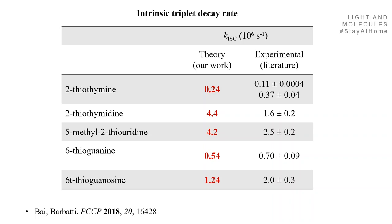Look at the comparison between theory — the red data — and experimental data — the black data in the table — for a few different thionucleobases. The agreement is in the right range. It's not a fully quantitative agreement, but given all the levels of approximation involved, it's really very good. I'm particularly pleased because you can predict quite well the order of magnitude of the rates.